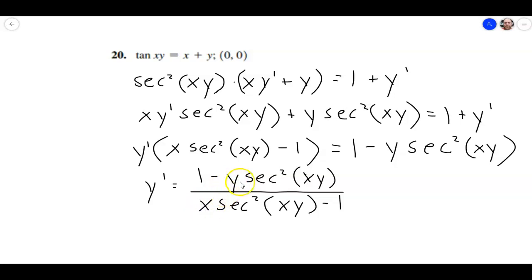And the secant squared of 0 is just 1, but it doesn't matter because we're multiplying both of those by a 0. So we're going to get 1 over negative 1. So f prime of 0 is equal to negative 1. So that's the slope of the tangent line at the point (0, 0). It's a negative 1 slope.